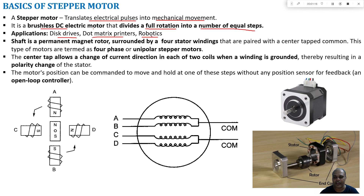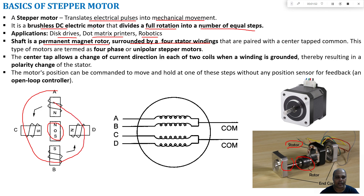Looking at the construction of a stepper motor, here I show a typical stepper motor which has stator windings and a center part which is your rotor. The shaft is a permanent magnet rotor surrounded by four or more stator windings. We have the permanent magnet rotor at the center as the movable part, and the stator windings are arranged around it. Coils A, B, C, and D are nothing but your stator windings.